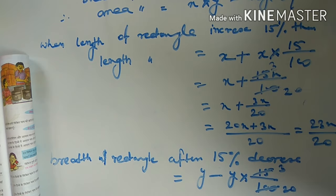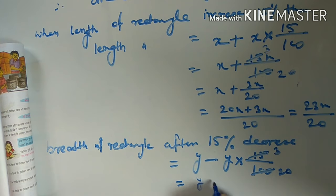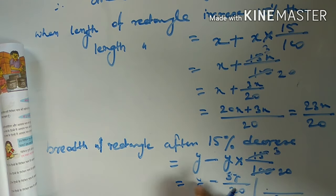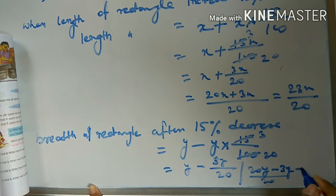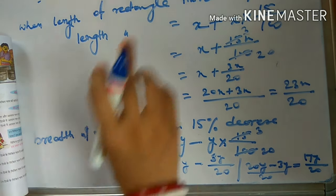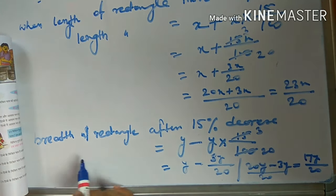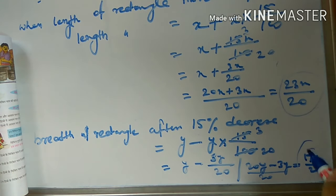Simplifying: 3 fives are 15 and 2 fives are 100, so we get y minus 3y by 20. Taking LCM of 20, we get 20y minus 3y all over 20, that is 17y by 20. So the new breadth is 17y/20. Now both the new length (23x/20) and new breadth (17y/20) are found.